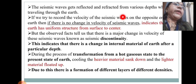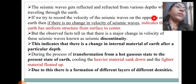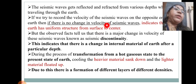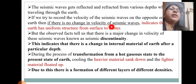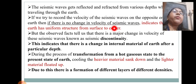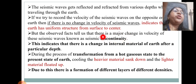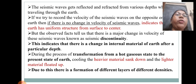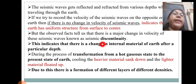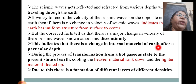Seismic waves get reflected and refracted depending on the material they travel through. If we record the velocity of seismic waves on opposite ends of the Earth and there is no change in velocity, it indicates the Earth has a uniform structure from surface to centre. But the observed fact tells us that there is a major change in velocity of seismic waves, known as seismic discontinuity, indicating a change in the internal material of Earth after a particular depth.